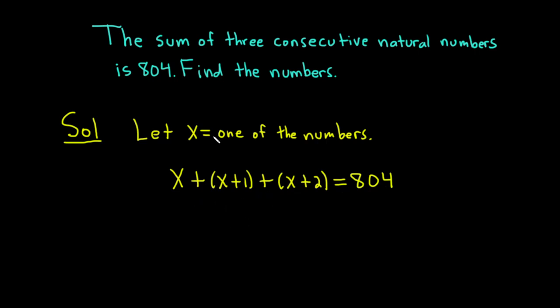Now we can combine like terms. We have x plus x plus x, that's 3x, and 1 plus 2 is 3. This equals 804.